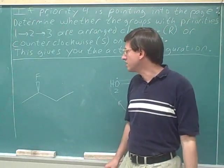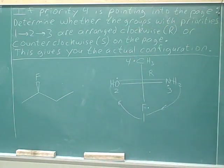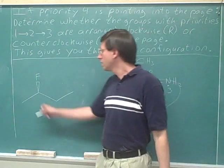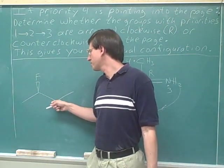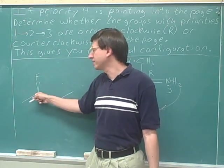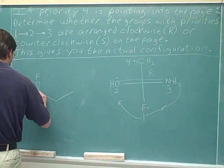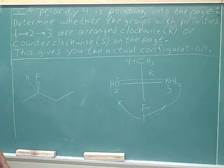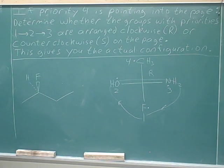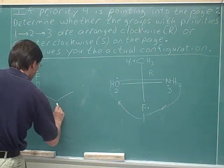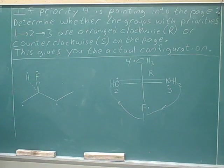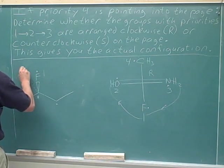Let's determine the R or S configuration for this stereocenter in bond line notation. This carbon is attached to a methyl group, an ethyl group, a fluorine, and there's also a hidden hydrogen. Let's determine the priorities around the stereocenter. It's a very good idea to draw in the hidden hydrogen at the stereocenter when working with bond line notation. The fluorine is number one priority and the hydrogen is number four priority.